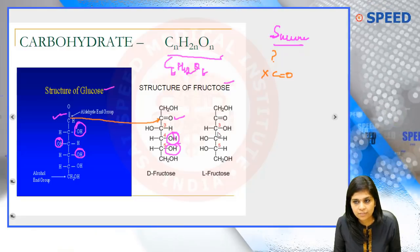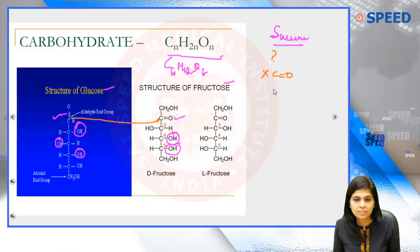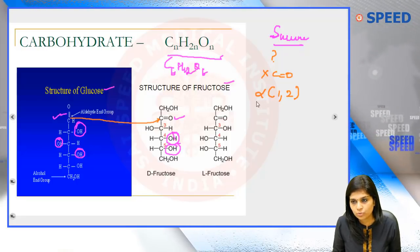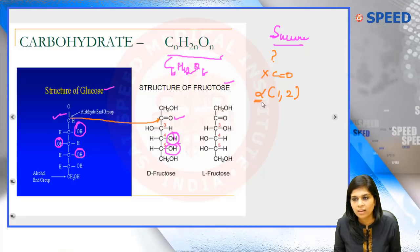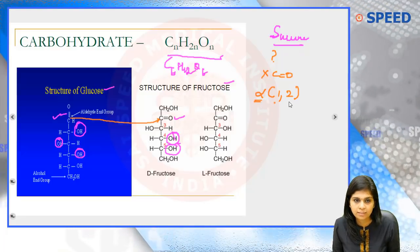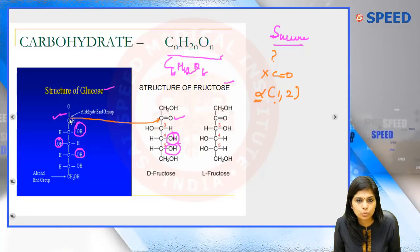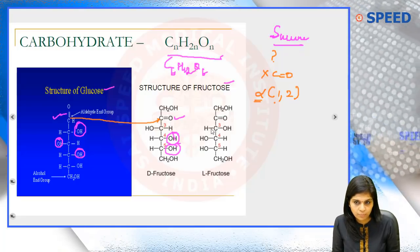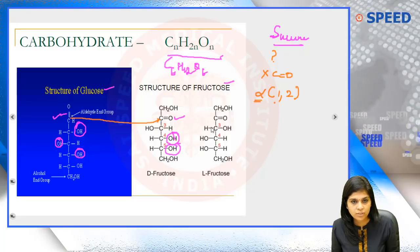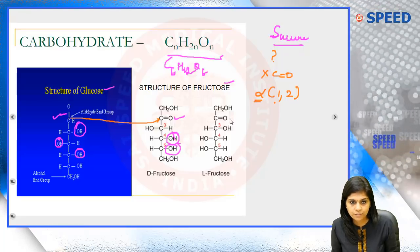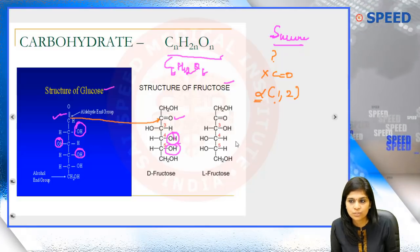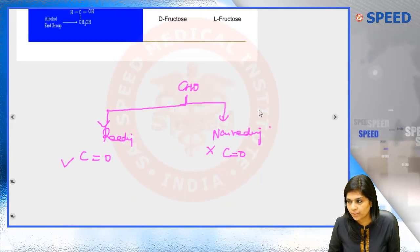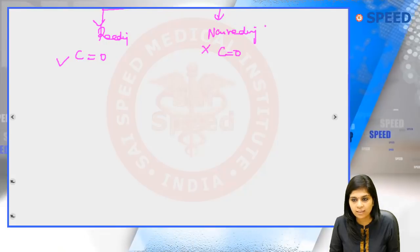So if you are asked why sucrose is non-reducing, your answer should be: because it lacks a free carbonyl group. And if asked why it lacks a free carbonyl group, your answer should be: because the linkage present in sucrose is alpha 1,2 — meaning it is formed by linking the first carbon of glucose with the second carbon of fructose. I'll explain what alpha and beta mean a little later. Now, what is the test we perform to detect the presence or absence of a reducing sugar in a given solution?